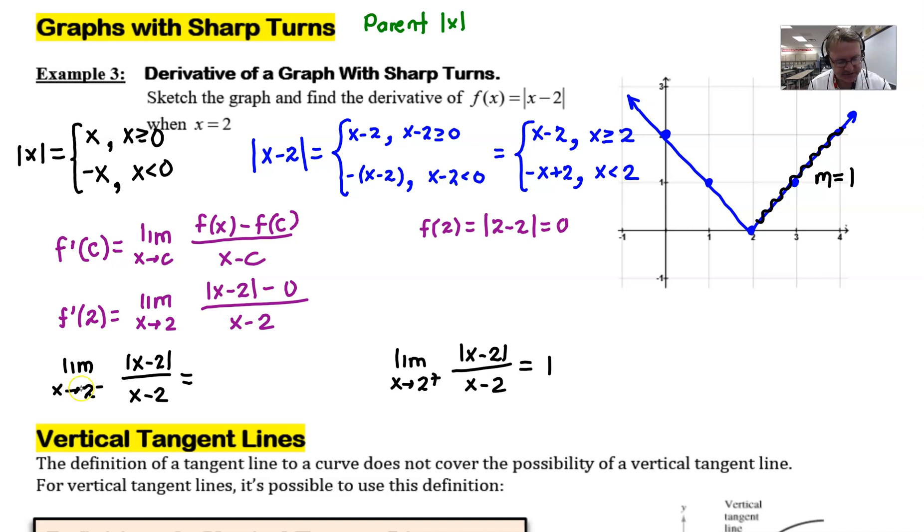Now if we move over to the other side, when x approaches 2 from the left, we have a situation where the absolute values are going to play a role. And if I were to use this idea, I end up with a negative number. I end up with negative 1, because the absolute value of x minus 2 is defined as negative quantity (x minus 2) when x is less than 2, as we see right here.